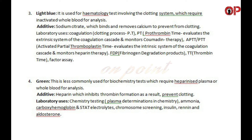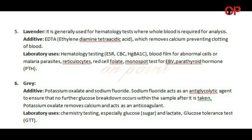Number four: Green tube. This is less commonly used for biochemistry tests which require heparinized plasma or whole blood for analysis. Additive: heparin, which inhibits thrombin formation and as a result prevents clotting. Laboratory uses: chemistry testing — plasma determinations including ammonia, carboxyhemoglobin, and stat electrolytes; chromosome screening, insulin, renin, and aldosterone.